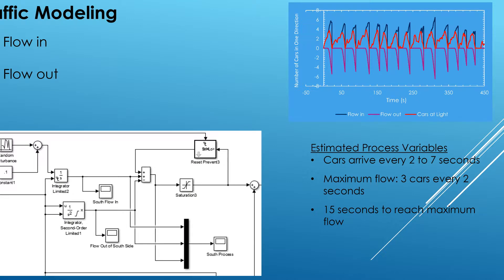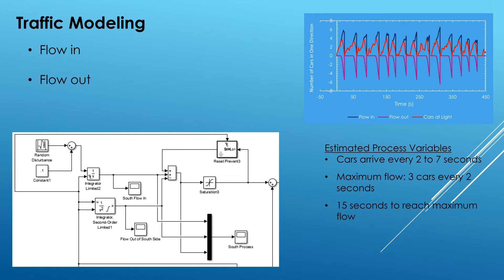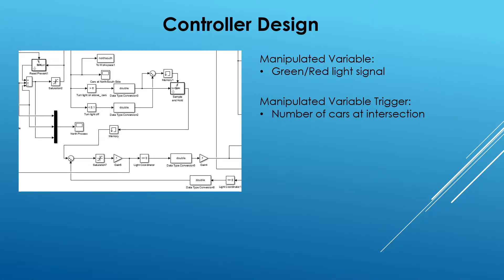Our next task was to design a controller that would turn the light on and off effectively and accurately. We designed the controller to be dependent on the number of cars at the intersection, so that once the number of cars hits a certain trigger value, the light will turn green and cars can flow out. We linked the intersections together so that as one light turns green, the other turns red to prevent accidents. This allowed us to adjust the trigger value to optimize the number of cars at the intersection.